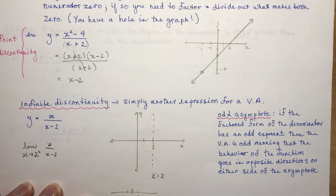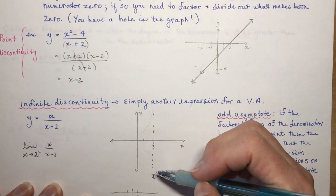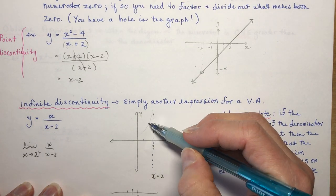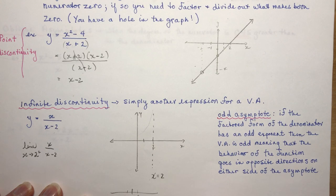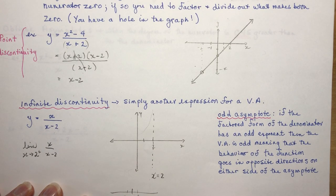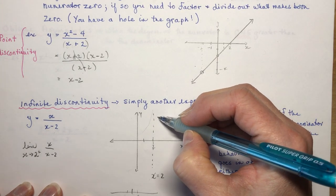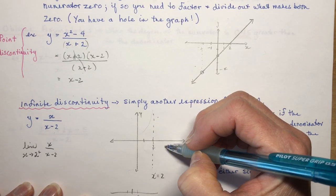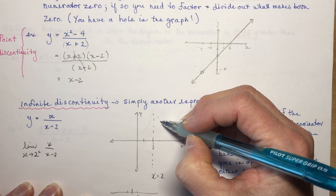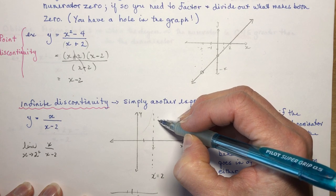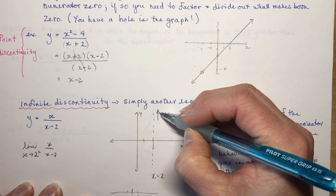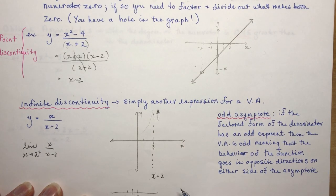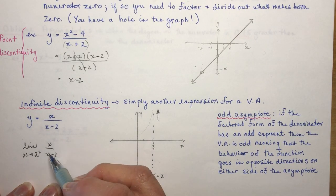I know it's an infinite discontinuity, so the function is either shooting up or down. If I put in 3, I get 3 over 1, which is 3 — positive. So at x = 3 I'm at 3, meaning from the right this function is going up.